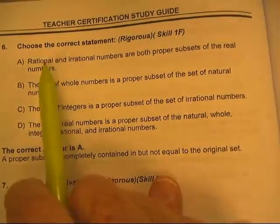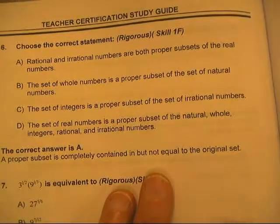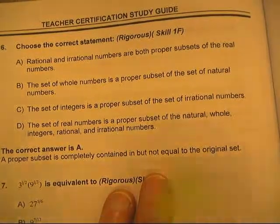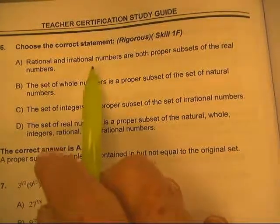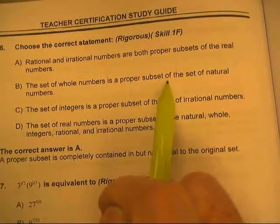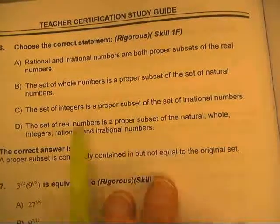Welcome back. Choose a correct statement: rational and irrational numbers are both proper subsets of the real numbers — that's a little iffy because they're telling us two. The set of whole numbers is a proper subset — that would work.